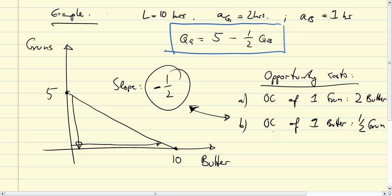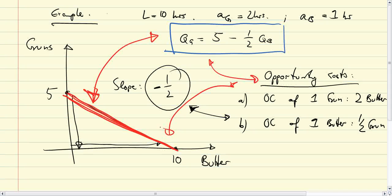That describes the production possibility frontier—this linear relationship derived from the labor supply constraint in a one-factor, two-good economy with a full employment assumption—and how that relates to the idea of opportunity costs.